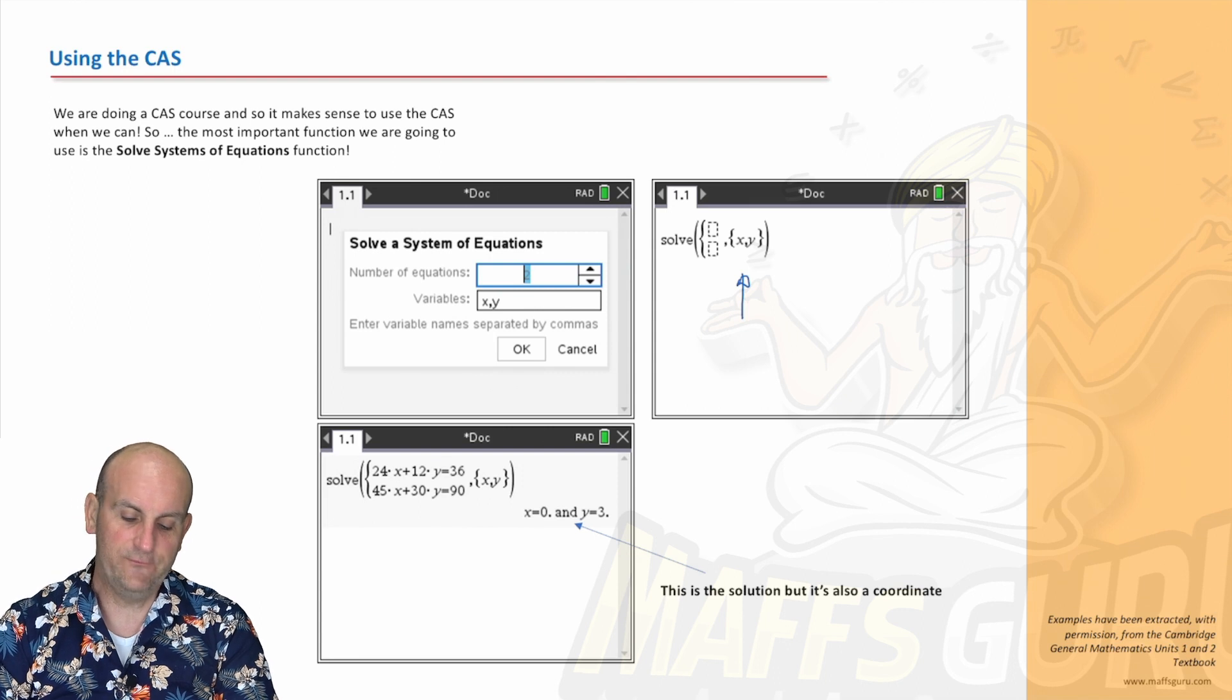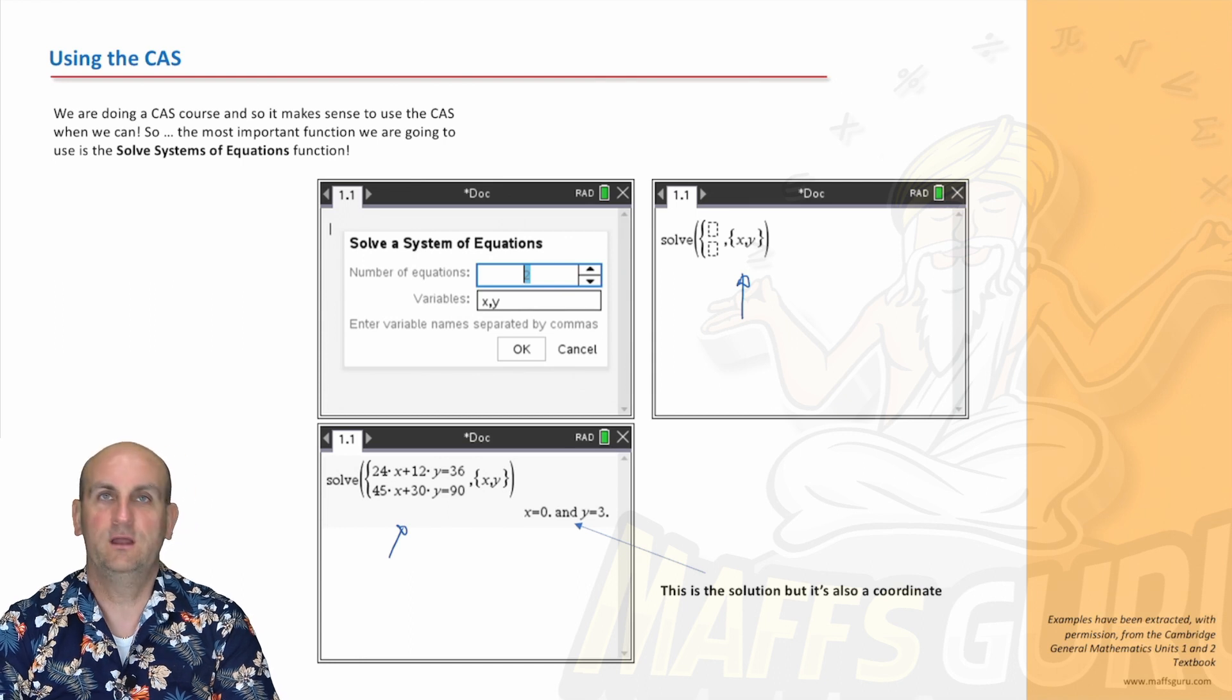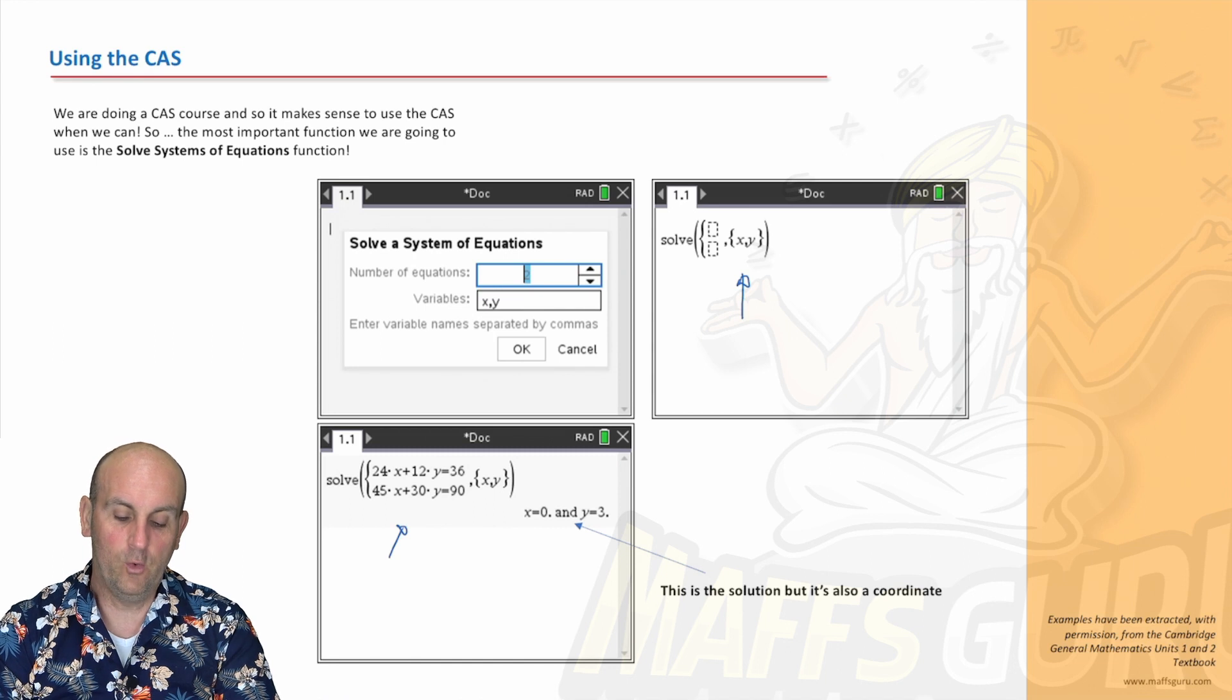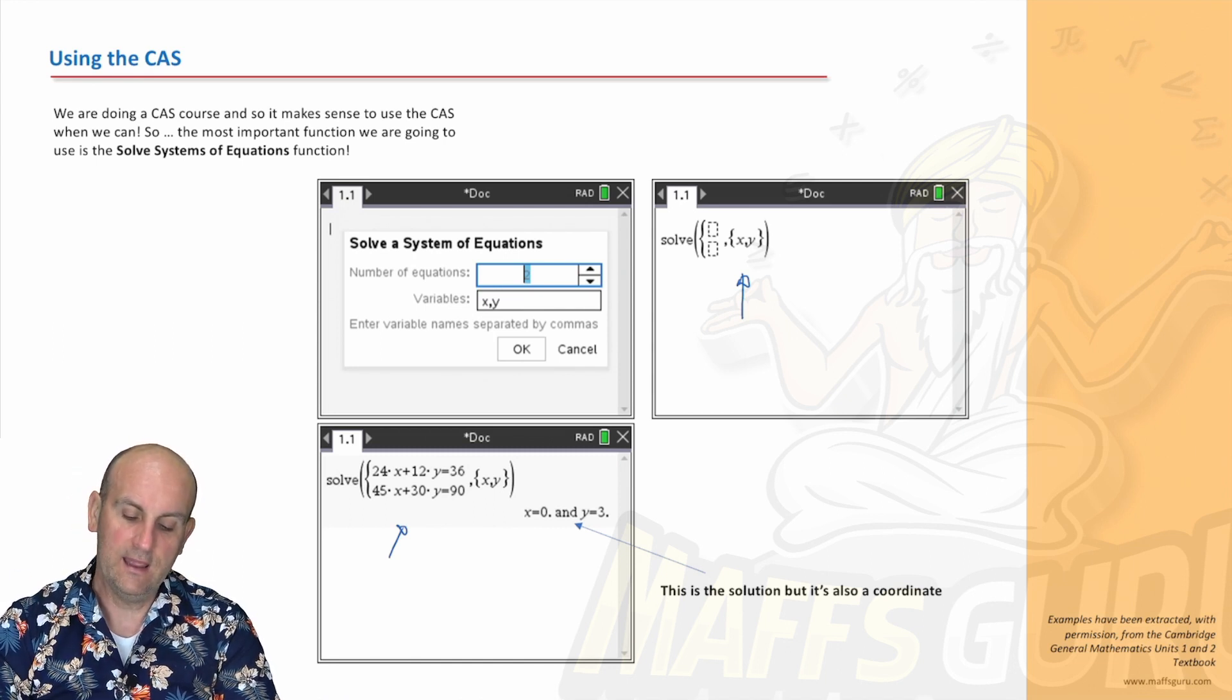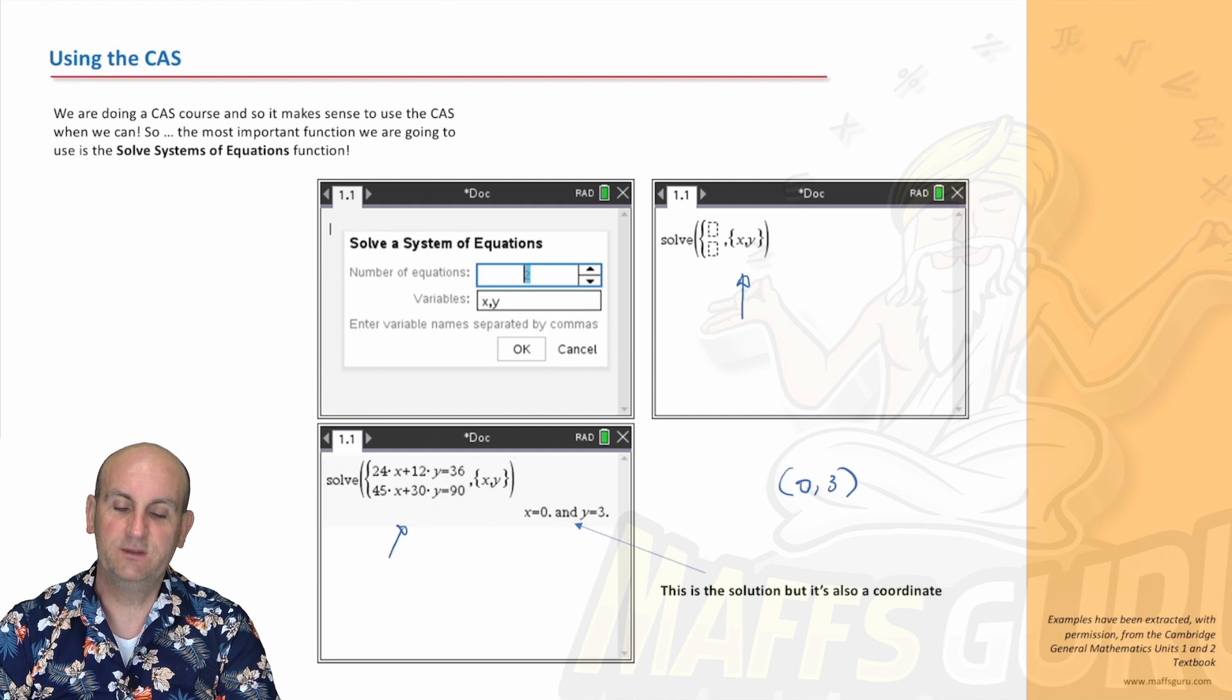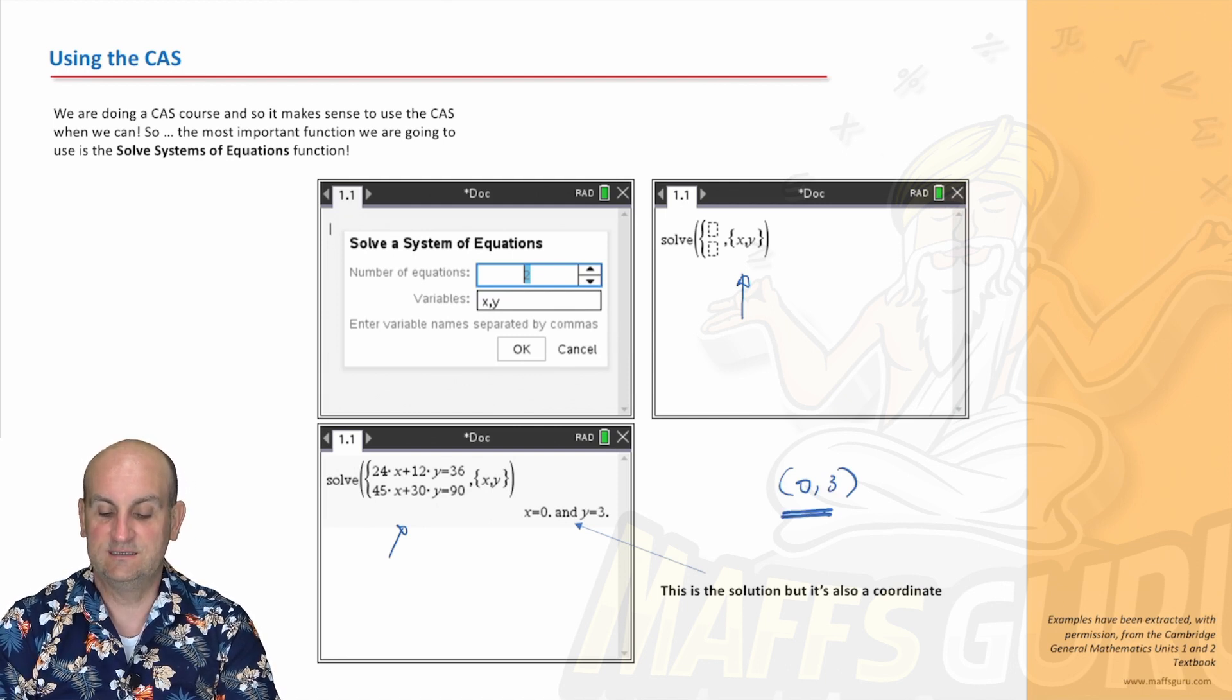So I've just chosen 24x plus 12y equals 36 and 45x plus 30y equals 90. I've just taken those two equations from the example somewhere. And then all I do, once I put the equations in, is I hit enter. And lo and behold, out comes x equals zero and y equals three. But remember, in this situation, because you're finding points of intersection, you'd probably want to write that as 0 comma 3.